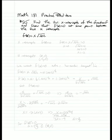This is number 25 from the Math 181 practice midterm. It says find the two x-intercepts of the function f and show that f prime of x equals 0 at some point between the two x-intercepts.